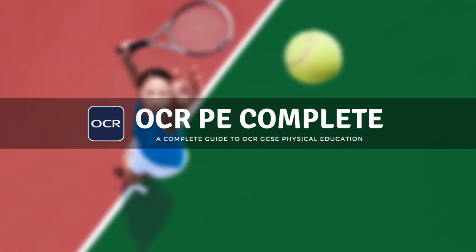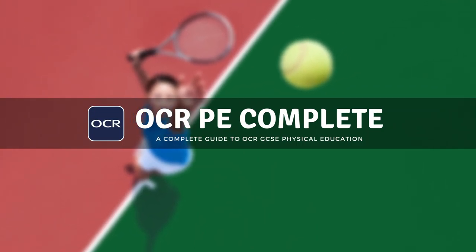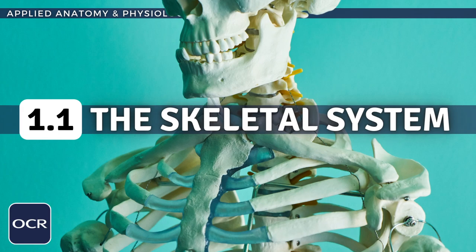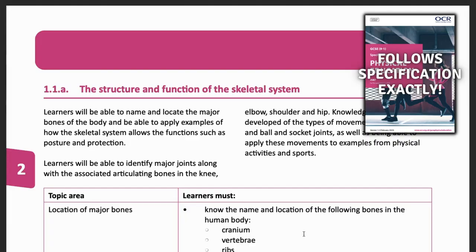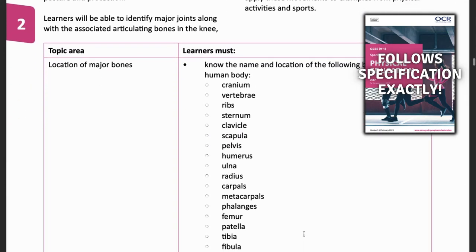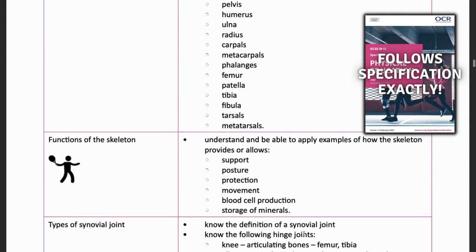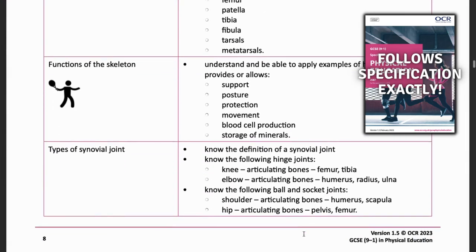Hello and welcome to another complete OCR GCSE PE lesson, where you'll learn absolutely everything you need to know on topic 1.1, the structure and function of the skeletal system. We'll be following the OCR syllabus exactly, and we'll cover absolutely everything you need to know for your final exam.